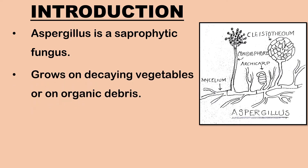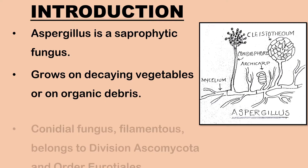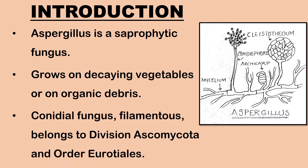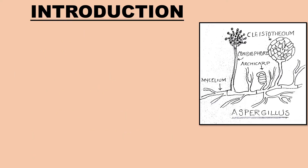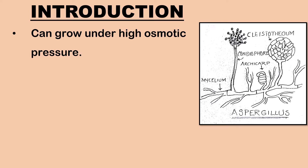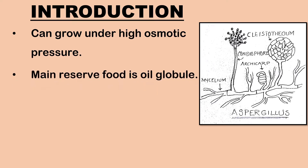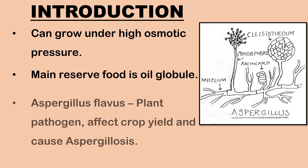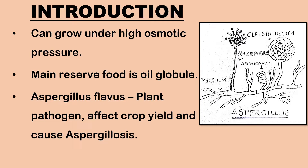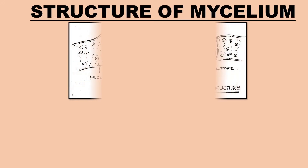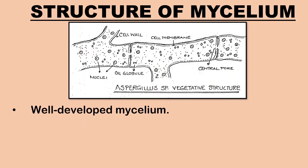Let us begin with the introduction to Aspergillus. Aspergillus is a cosmopolitan saprophytic fungus. It grows on decaying vegetables, decomposed food, or on organic debris. Aspergillus is a conidial fungus which is filamentous and belongs to division Ascomycota and order Eurotiales. It can grow under high osmotic pressure. The main reserve food of Aspergillus is oil globules. Aspergillus flavus is a plant pathogen which produces carcinogenic aflatoxins, impacting crop yield and is a common cause of aspergillosis.